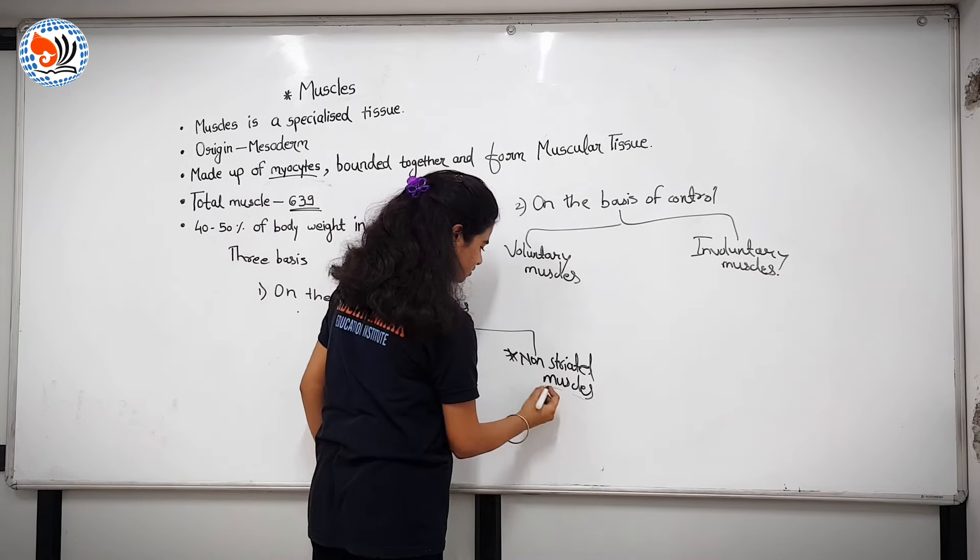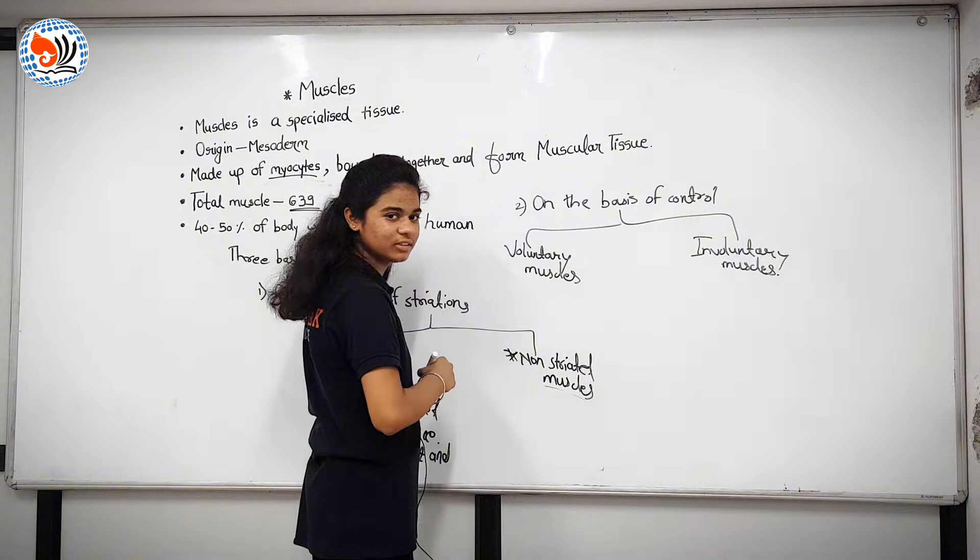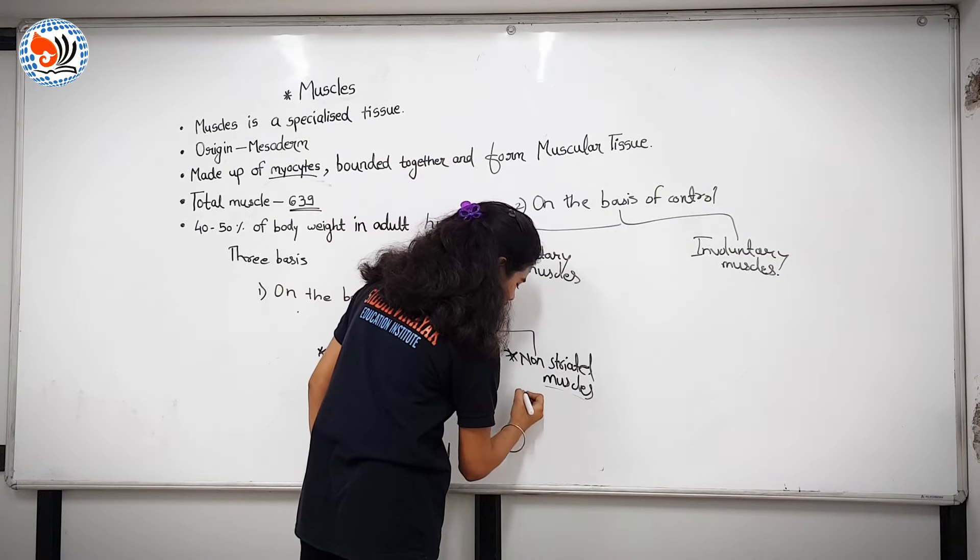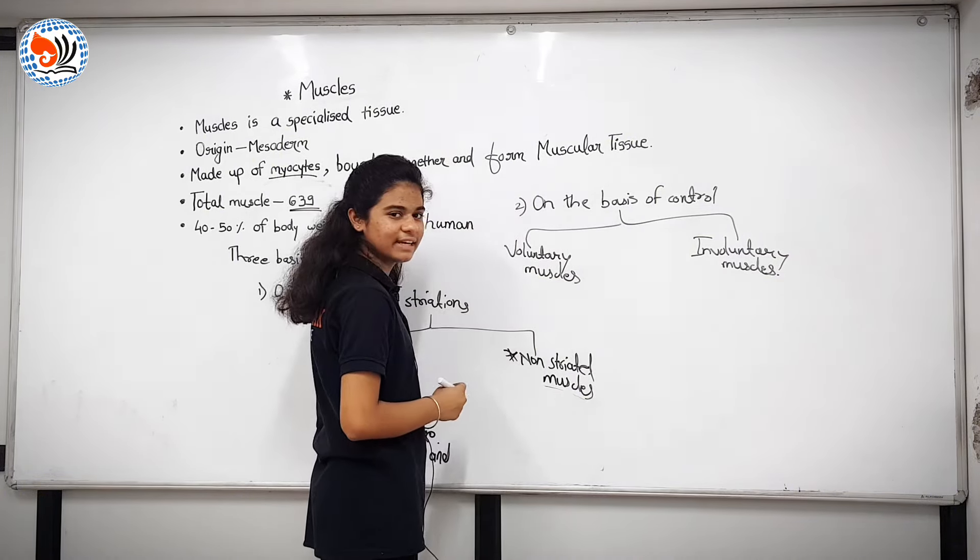Second, non-striated muscles. These are opposite of striated muscles. Means they do not show striped appearance and they do not have light and dark bands.